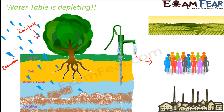Agricultural needs are another reason. Agriculture requires sufficient water, and in areas with inadequate rainfall, farmers utilize underground water to water their crops. Unlike a small garden, agriculture involves a huge stretch of land that needs watering daily, so large amounts of water are extracted from underground reservoirs, causing the water table to deplete.